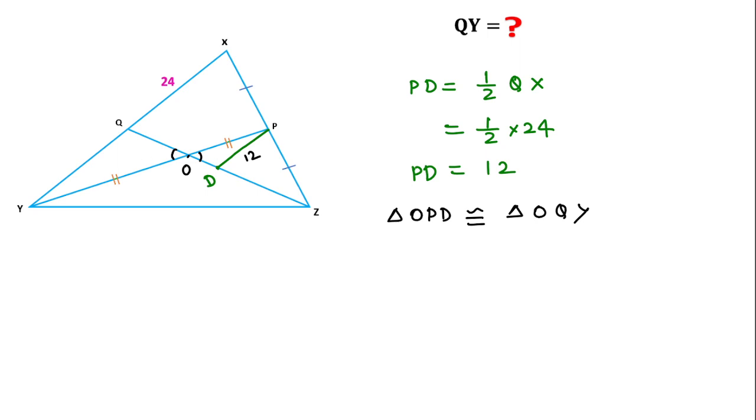And according to congruent properties, we can write the length of QY equal to the length of PD, and PD length is 12. So 12 will be the right answer for this question. So thanks for watching this video, and please like, share, and subscribe to this channel.